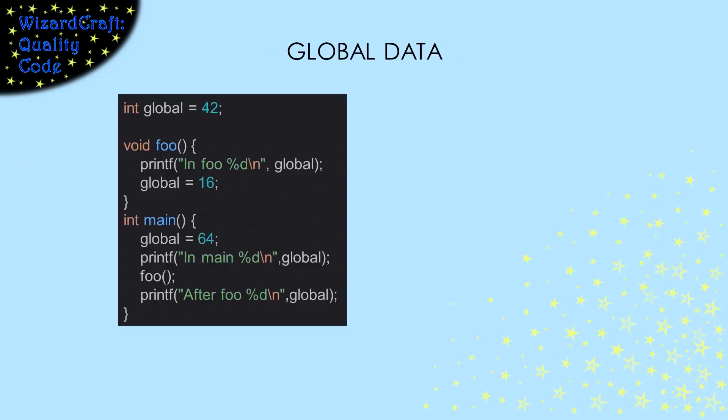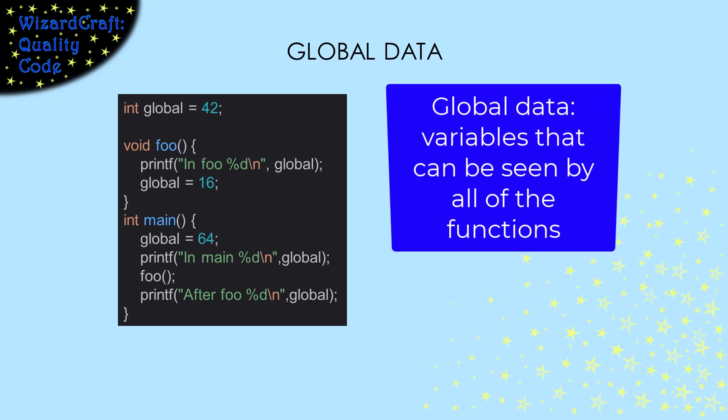Before we can understand the rest of that diagram, we need to understand what global data is. Global data is data that's visible outside of the execution of any particular function. If you declare a variable outside of any function, it is global data and it can be used inside any function. For now, let's not worry about accessing it from other C files, but you can.